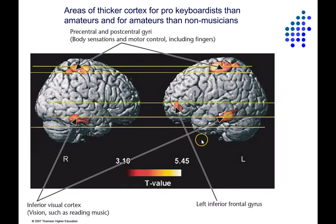This figure shows the results of that study. What's shown in red are areas where the cortex is thicker in professional keyboardists than in amateur keyboardists, and thicker in amateur keyboardists than in non-musicians. This part of the brain includes both primary motor cortex and primary somatosensory cortex for the hand in both hemispheres. Down in the inferior temporal lobe is an area important for object recognition, and this increase in thickness may be a result of the extensive practice in reading music.